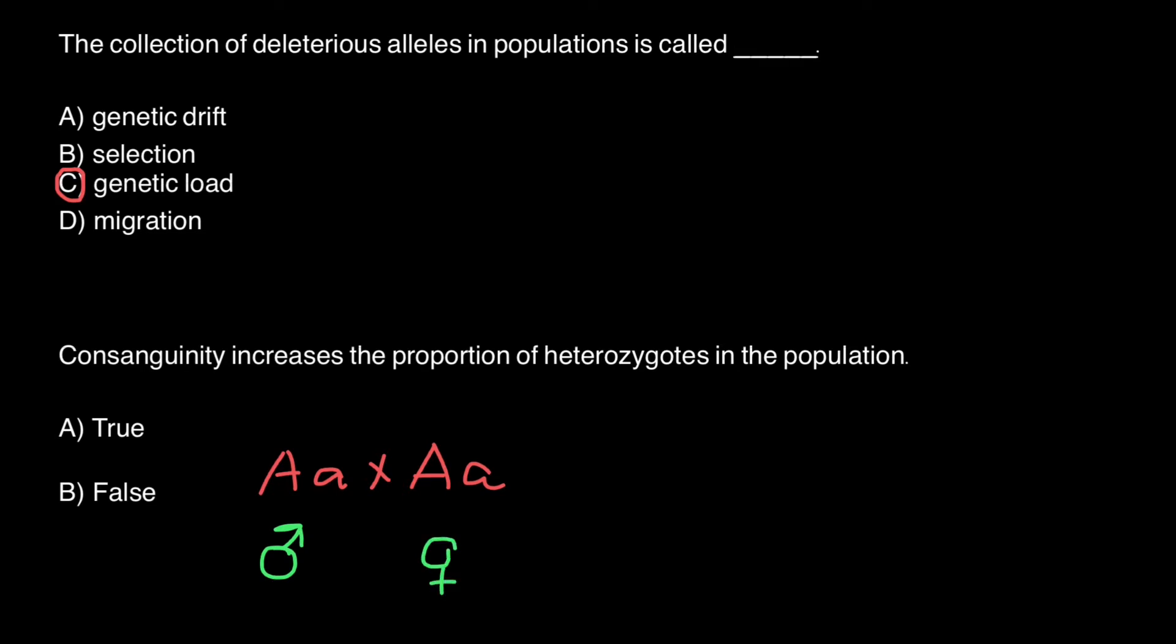So in this parental generation, we have 100% heterozygosity. This locus A for gene A is 100% heterozygous in both parents.